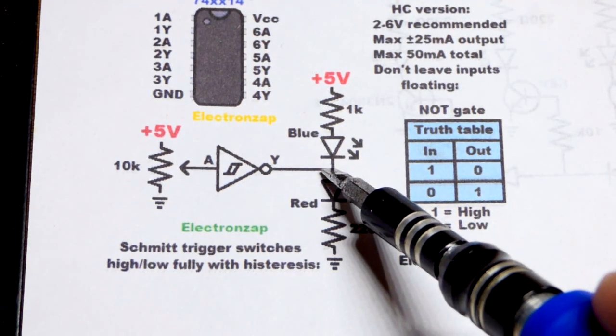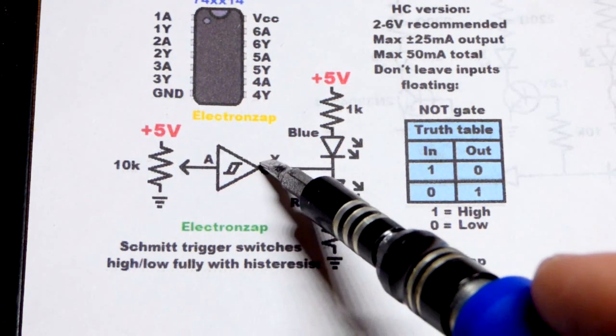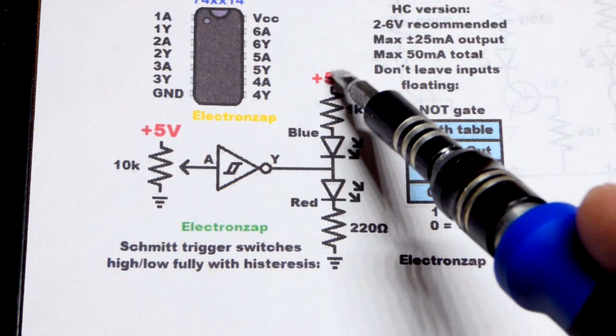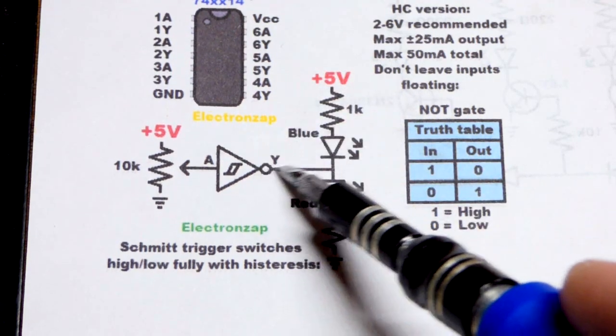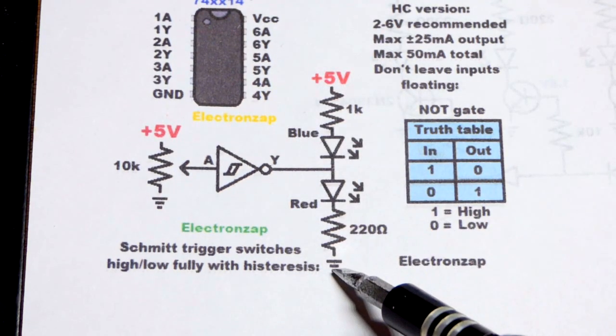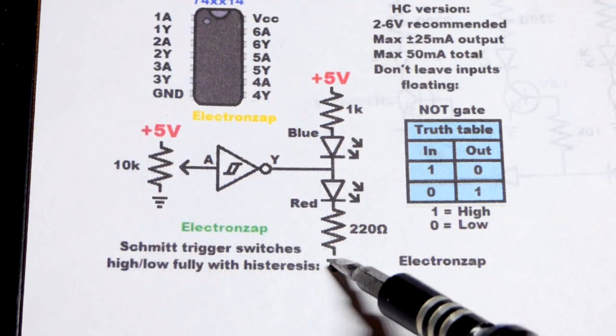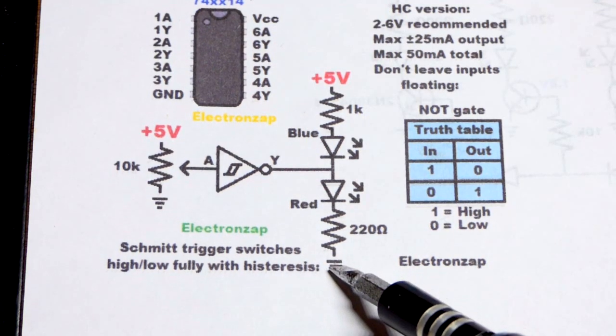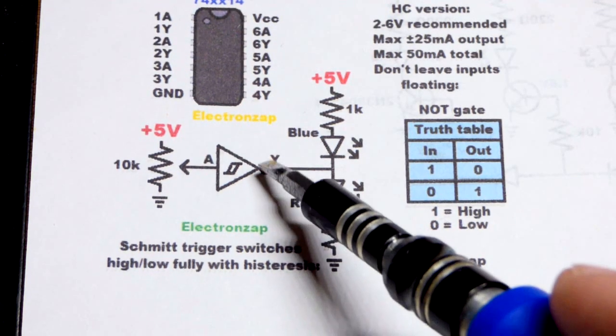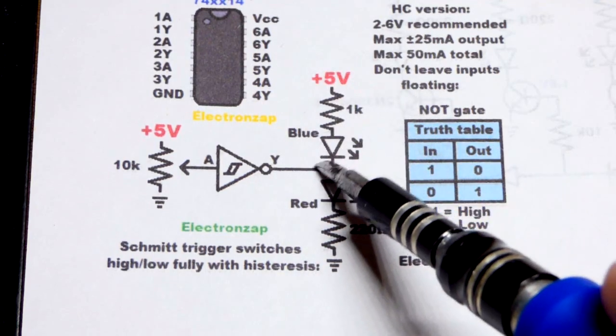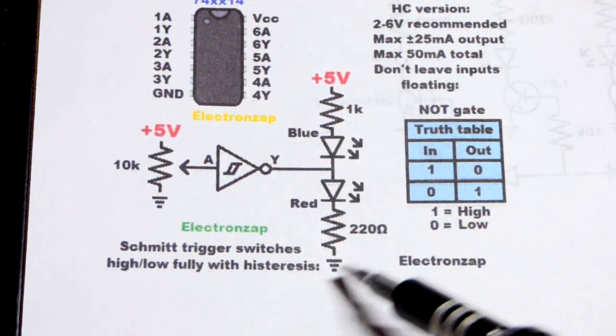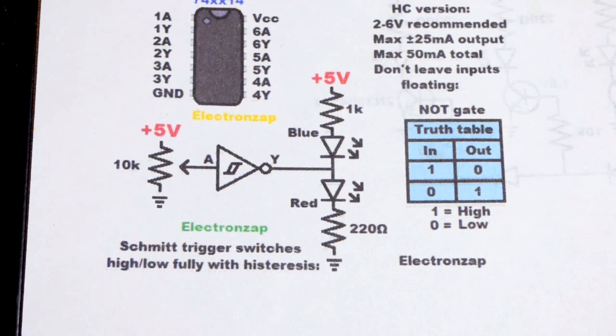We're going to use LEDs to get a visual of when the output is high or low. So when the output is high, it will be as close to 5 volts as it can get. You can see the red LED will light up. When the output is low, it will be as close to 0 volts as it can get. Right there. And so the blue LED will light up. I like using that color scheme.